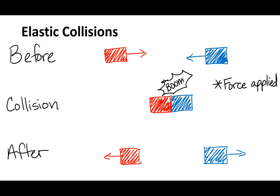Now, this is just one scenario. There are lots of different scenarios — one of them is not moving, both going the same direction but different speeds, different masses. I'm just drawing one to explain how elastic collisions work.